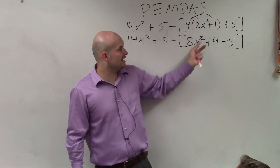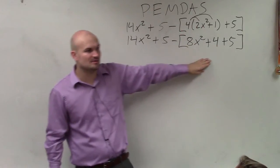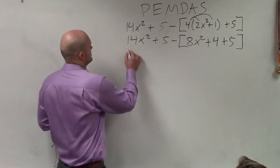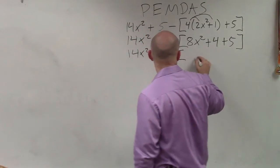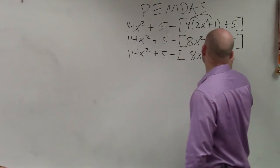So therefore, 8x squared plus 4. Now, can I simplify inside this grouping symbol? Yeah, you can combine those. So 14x squared plus 5 minus 8x squared plus 9.